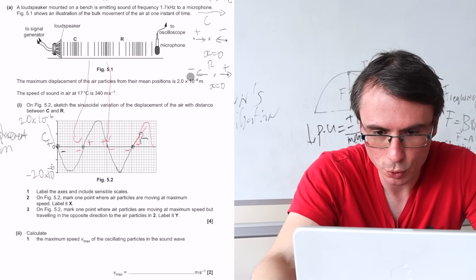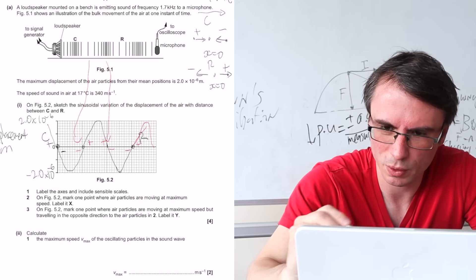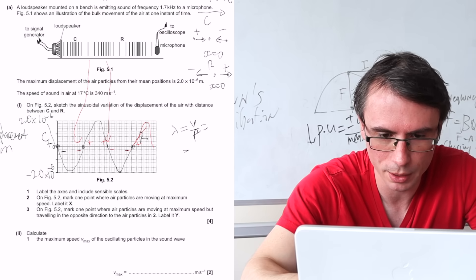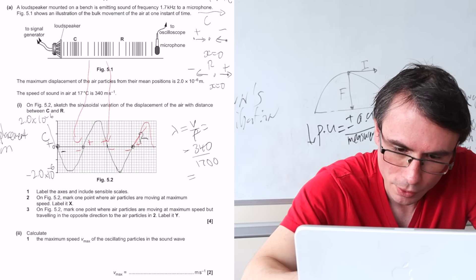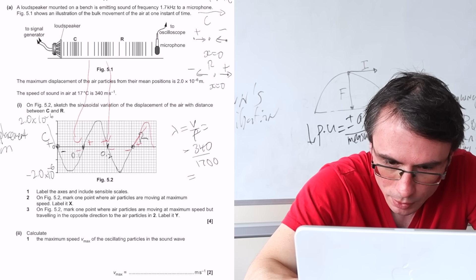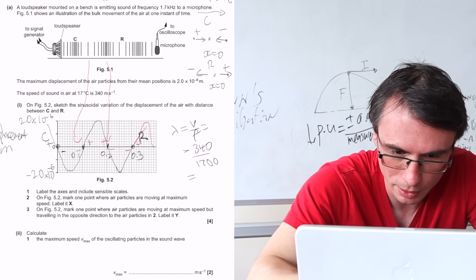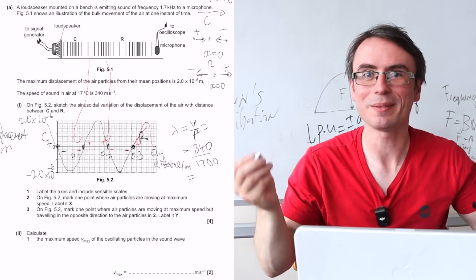We need to put scales on the x-axis. Do we have the wavelength? We're given the speed of sound and the frequency, so wavelength equals speed divided by frequency: 340 over 1700 equals 0.2 metres. So from one point to the next is one wavelength. The scale reads 0.1, 0.2, 0.3 — that point is clearly labelled R — and this one is C. Then 0.4. This axis is distance in metres.